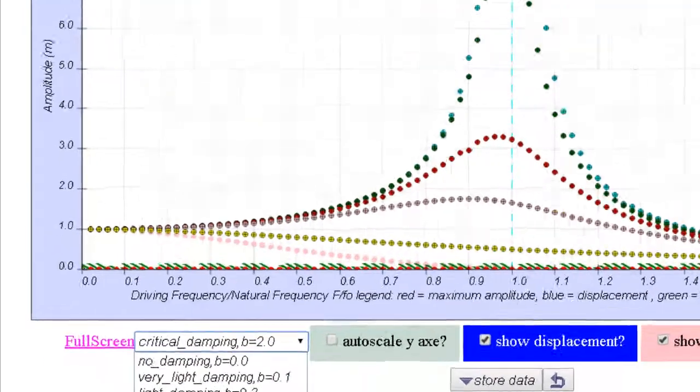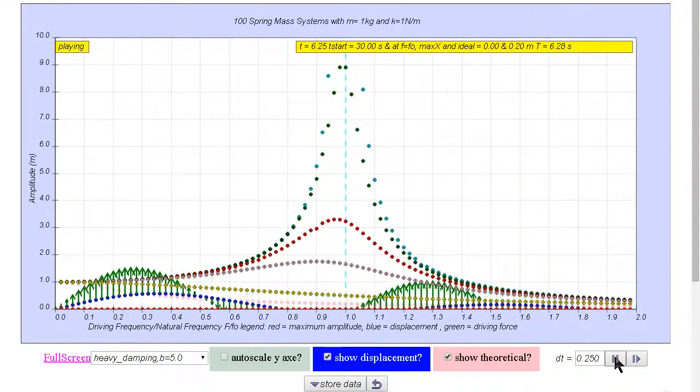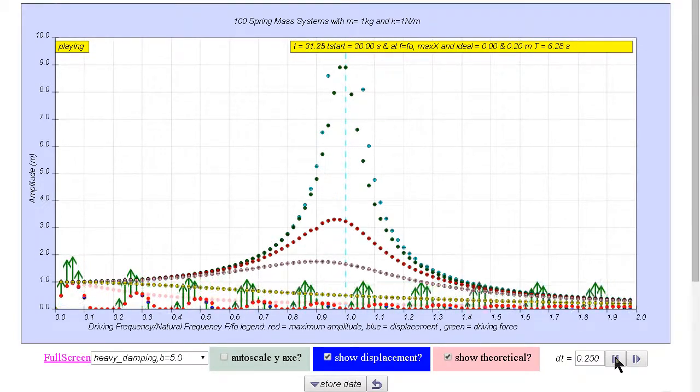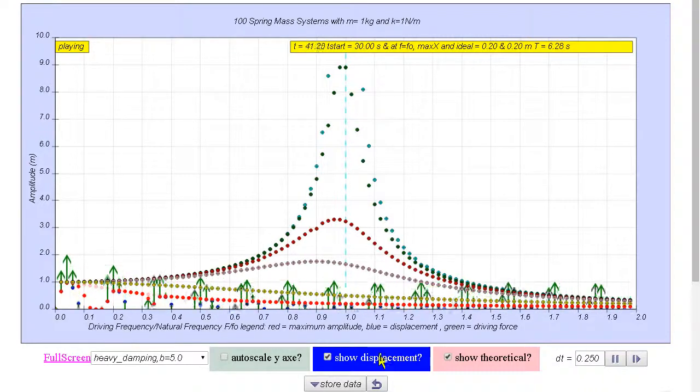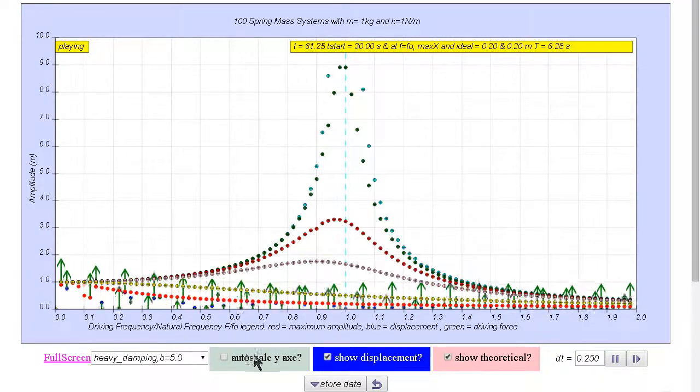And finally, when we choose the heavy damping case, you can see that the system oscillates, and after a certain time, it will then start to compute the maximum amplitude as shown as the red dots, and eventually it will show the force resonance response graph.